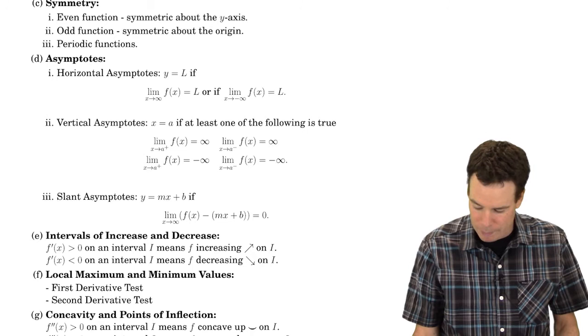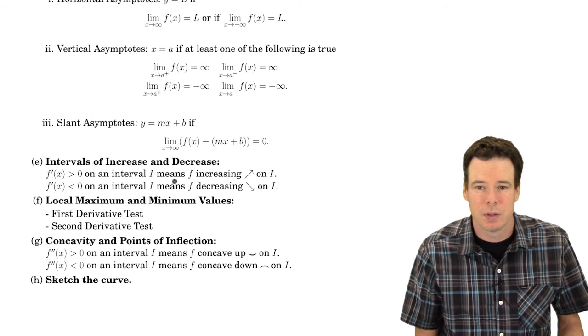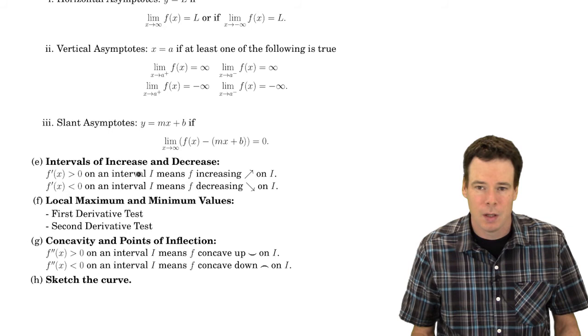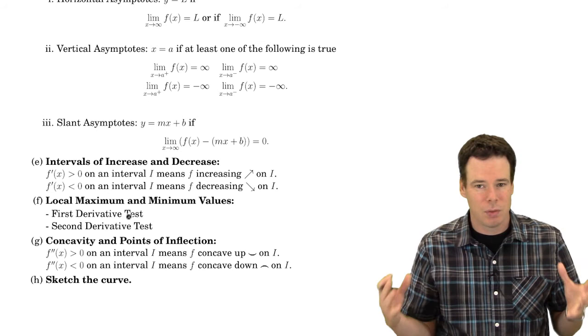Then we can use the first derivative to figure out the intervals of increase and decrease. Just remember that if the derivative is positive then this means the function is increasing on that interval. If the derivative is negative on the interval then it's decreasing on that interval. Then we can go ahead and find our local max and local mins using our first and second derivative test. So we're putting everything we've learned all together here.